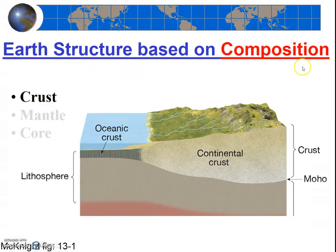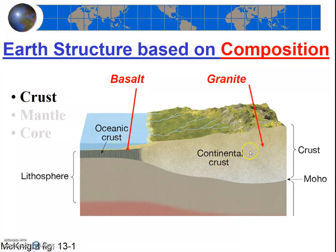So if you were asked what the composition of the earth's crust was, you should ask which part of the crust. The oceanic crust is made out of basalt, and the continental crust is made out of granitic material, granite.